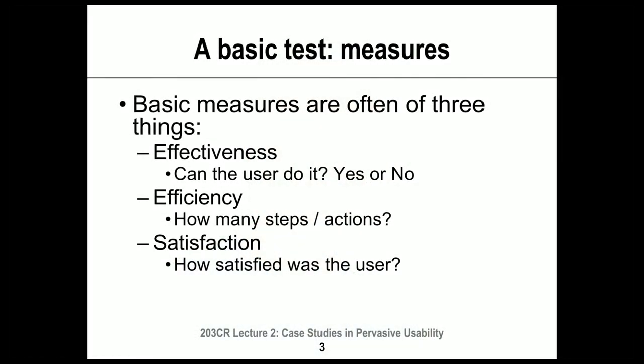As a whole, we're trying to understand how usable something is, but we're usually measuring something specific. Common measures for usability tests include effectiveness — which means can the user actually do something, yes or no. In a usability test on the Coventry University site, we're measuring whether they can find those contact details. We might also decide a time limit — for example, can they do that in 20 seconds?